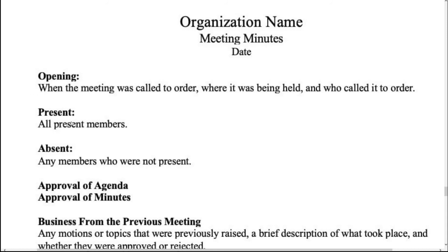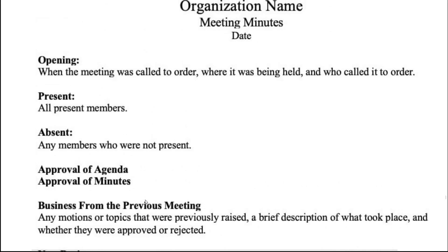In the 'Present' section, all present members should be listed. In the 'Absent' section, members who were invited but did not attend should be mentioned. Then comes approval of agenda and approval of minutes — whether the agenda and previous minutes were approved or rejected should all be noted here.